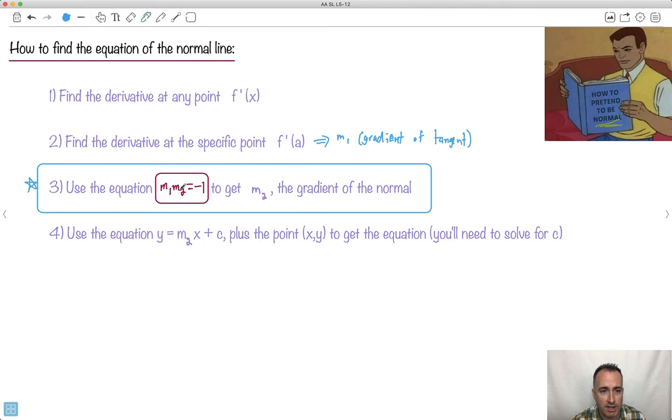This right here is a gradient. I'll write it down here. This is a gradient of the tangent. But we don't want the tangent line. We want the normal line. So we have to do something to the gradient of the tangent. And what do we do? Well, basically if you think about this, if you get m2 by itself, you end up with m2 equals negative one over m1. So basically you take the negative reciprocal. You take your m1 value, you flip it and you change the sign.